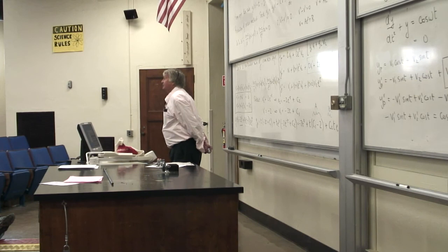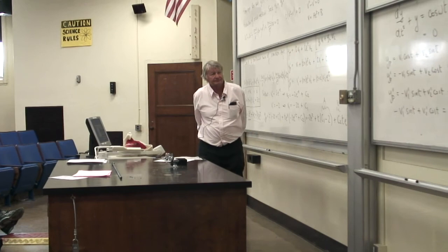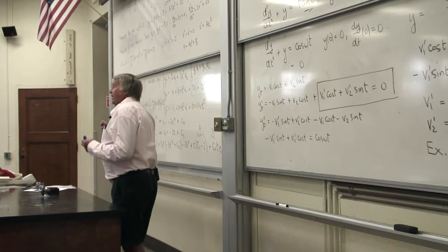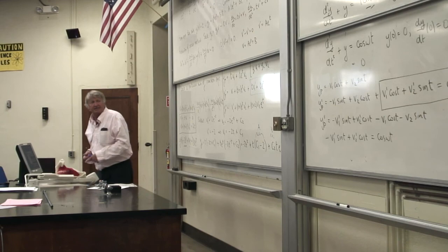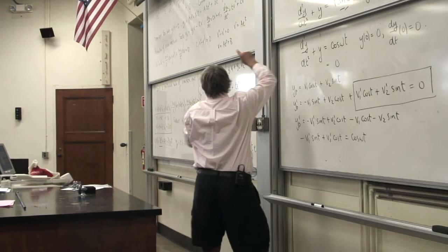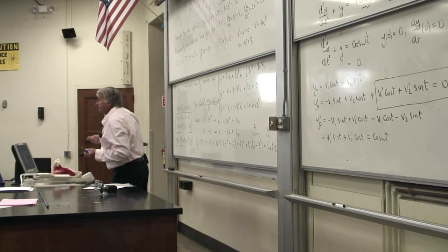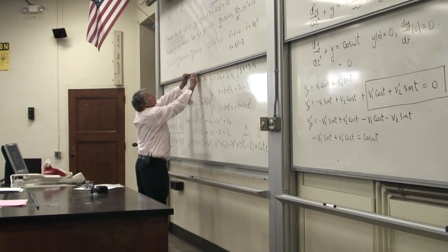Any questions on the method of variation of parameters? — Can you explain why you could set that second half of the equation to zero? Very good question. You have two unknown functions and only one constraint — the differential equation Yp must satisfy. It turns out very convenient to seek a solution in the form Y₁V₁ + Y₂V₂ where Y₁, Y₂ are the homogeneous solutions.